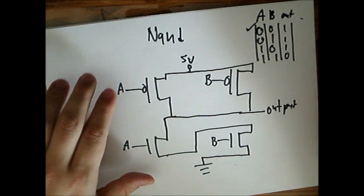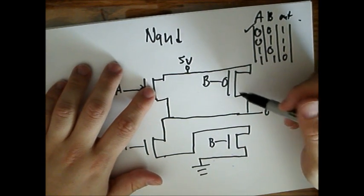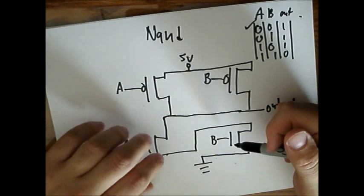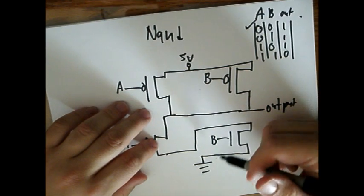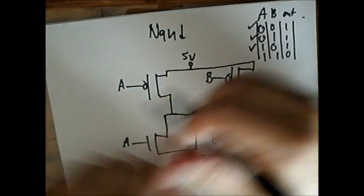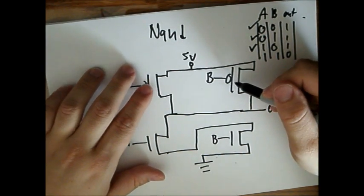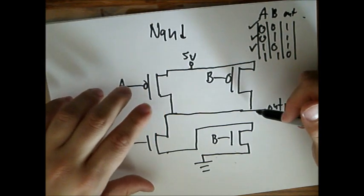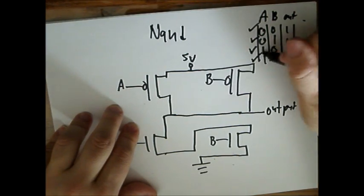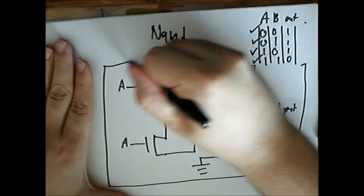So when A is 0 and B is 1, this connection is closed, this connection is open. So our output is still connected to the 5 volts. However, when A is 0, this connection is open and this one is closed, so it will not be connected to the ground. So this is still 1. Same behavior for 1 and 0, just vice versa. And now when it's 1, 1, these connections are open, so 5 volts is not connected to output anyway. And these circuits are closed, so output is connected to the ground, which is 0. And so now we have our final diagram for our NAND gate MOSFET diagram.